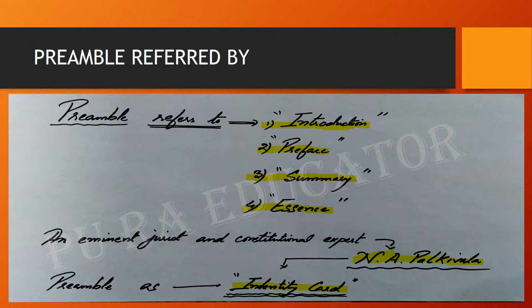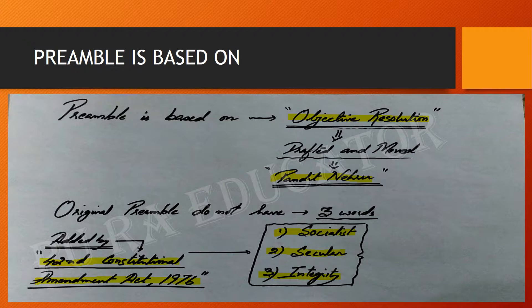Now we will see what the Preamble is based on. The Preamble is based on the Objective Resolution which was drafted and moved by Pandit Nehru. The Objective Resolution points were directly taken into the Preamble when the Constitution was drafted. The original Preamble does not contain three words: Socialist, Secular, and Integrity. During the emergency period, when Indira Gandhi was the Prime Minister of India, the 42nd Constitutional Amendment Act of 1976 was passed, and through this amendment these three words — Socialist, Secular, and Integrity — were added.